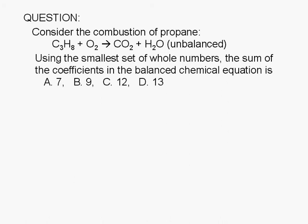Consider the combustion of propane: C3H8 plus O2 yields CO2 plus H2O. Using the smallest set of whole numbers, the sum of the coefficients in the balanced chemical equation for this reaction is A. 7, B. 9, C. 12, or D. 13.